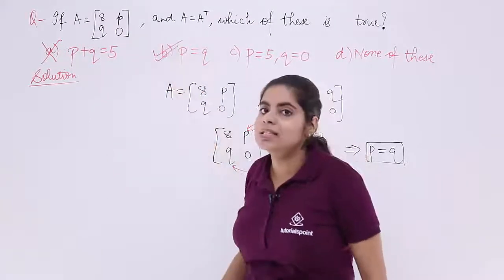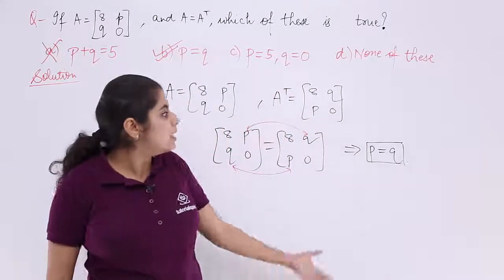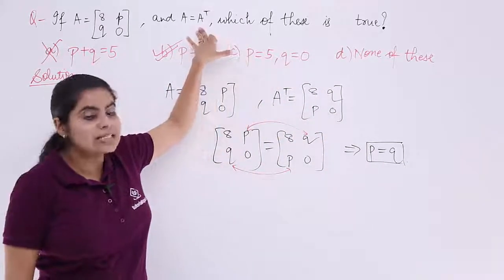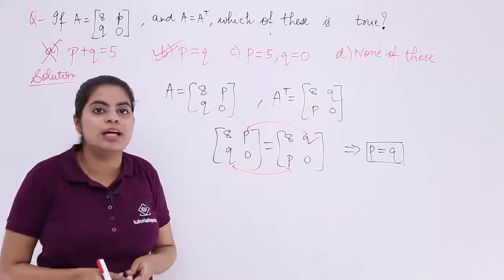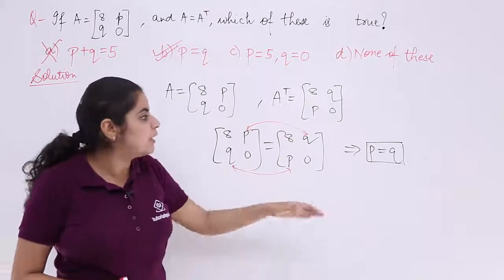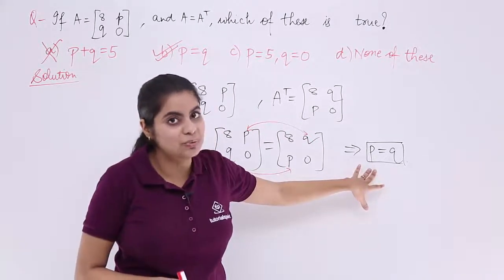Option number B is my answer to this question wherein we were given the condition that a matrix is equal to its transpose, that means it is a symmetric matrix. We found out the condition, P is equal to Q.